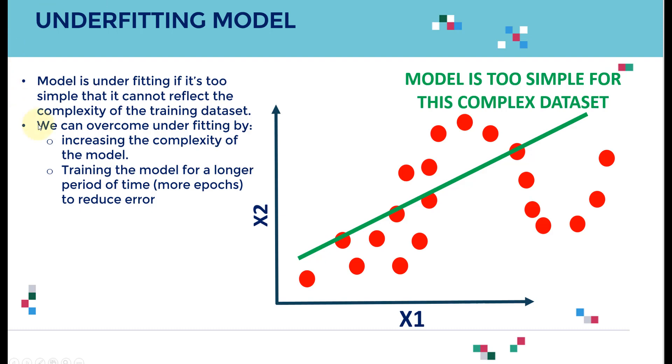We can overcome underfitting by increasing the complexity of the model—maybe adding nonlinearity, training a deep learning model or artificial neural network, or trying another type of regression model. You may also need to train the model for a longer period of time, more epochs for example, to reduce the error.